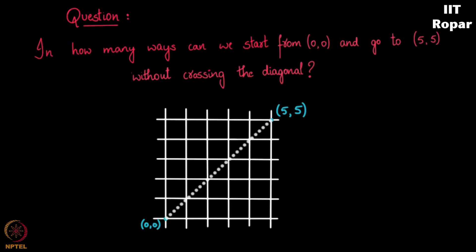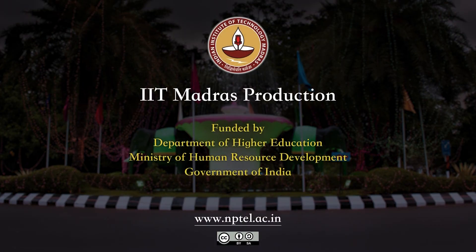What is the question? The question is, in how many ways can you reach your destination (5,5) from your starting point (0,0) without trespassing the fence which happens to be the diagonal? So let me count the total number of ways for this now.